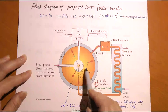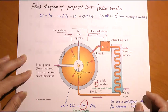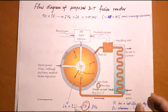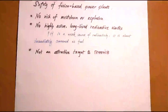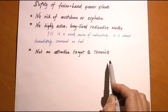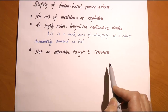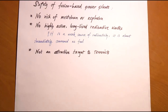Even if neutrons were to leak out, they would decay in minutes with a half-life of about 930 seconds, causing no long-term environmental damage. This also makes fusion plants unattractive targets for terrorism: even if attacked, they would not cause large-scale environmental disaster. For all these reasons, there is strong motivation to increase research efforts toward building the next generation of fusion-based nuclear power plants.